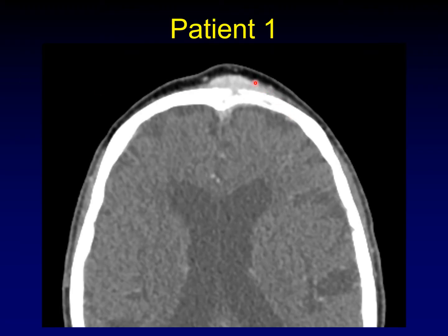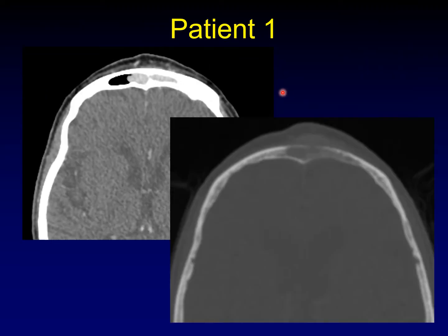Here's patient number one. You can see a mass in the forehead deforming the skin line, and you can even see a small defect in the underlying bone. A slightly lower cut shows the abnormality inside the frontal sinuses and a ratty appearance to both the anterior and posterior tables of the frontal sinus.